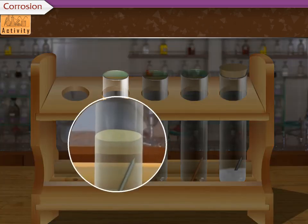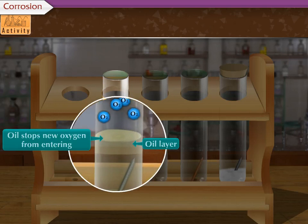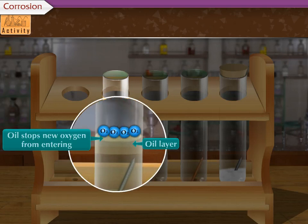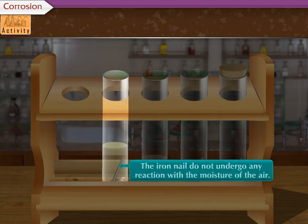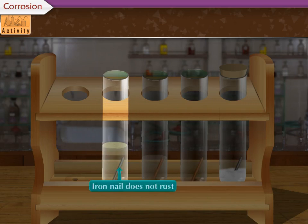In the first test tube, boiled water has no oxygen and oil stops new oxygen from entering. Due to this, the iron nails do not undergo any reaction with the moisture of the air. The result is that the iron nail does not rust.